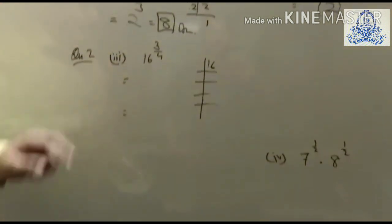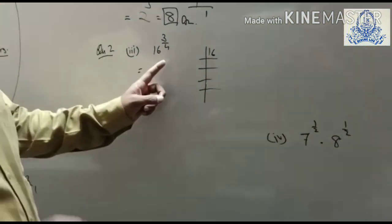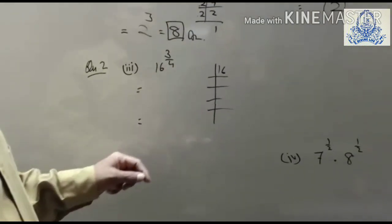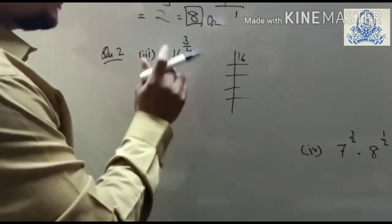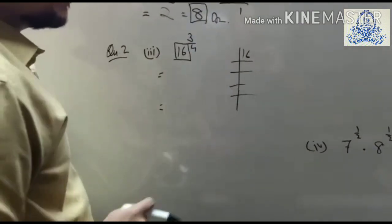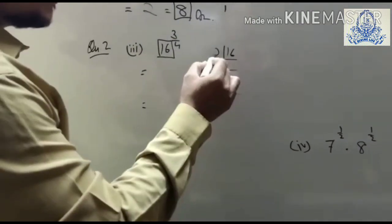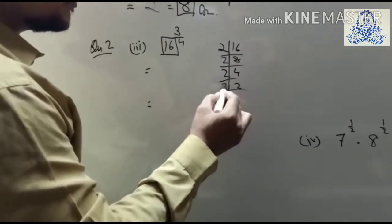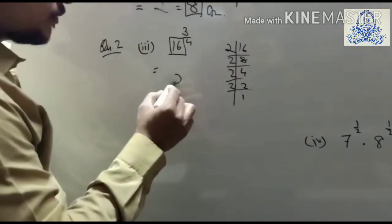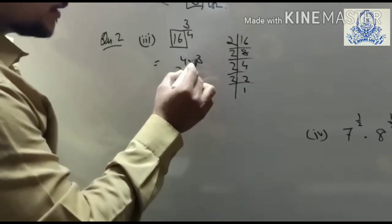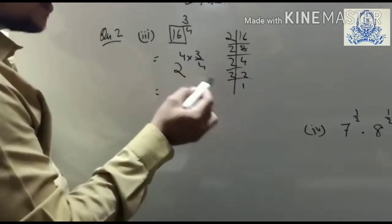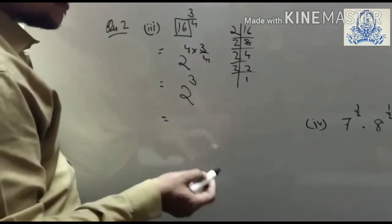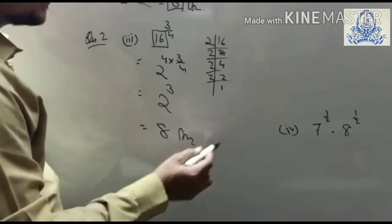Next question: 16^(3/4). The power is already given as a fraction. Find the prime factors of 16: 16 = 2⁴. So we write (2⁴)^(3/4). Multiply the exponents: 4 × (3/4) — the 4s cancel — giving 2³ = 8 as the answer.